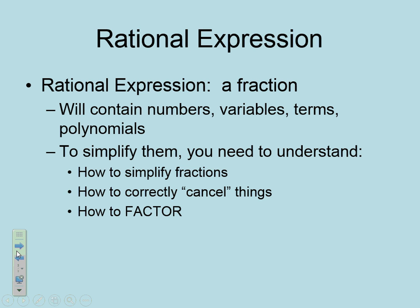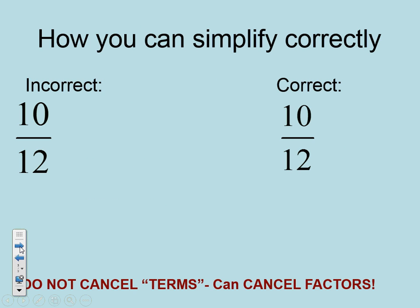First thing we're going to talk about is make sure we know how to simplify a fraction. Now, if we think about this, an incorrect way to simplify 10 over 12 would be to say, okay, 7 plus 3 and 9 plus 3. They have 3's in common. But, whenever there's an addition sign or a subtraction sign, we cannot cancel things.